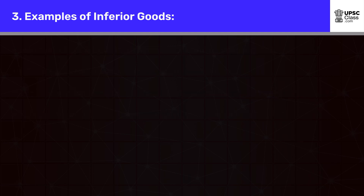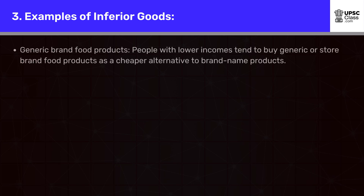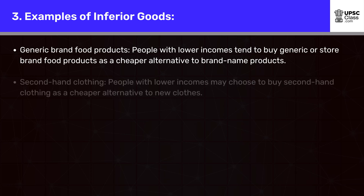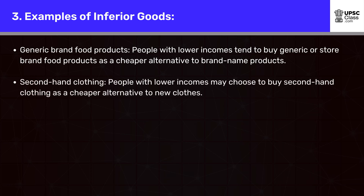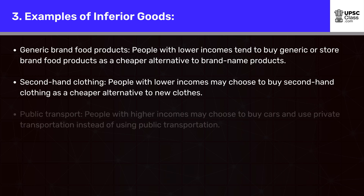Examples of inferior goods: Generic brand food products — people with lower incomes tend to buy generic or store brand food products as a cheaper alternative to brand name products. Secondhand clothing — people with lower incomes may choose to buy secondhand clothing as a cheaper alternative to new clothes.